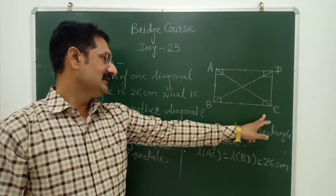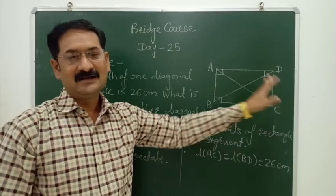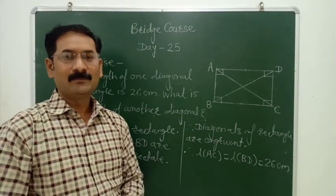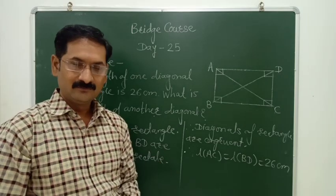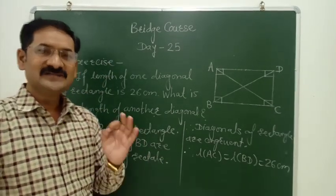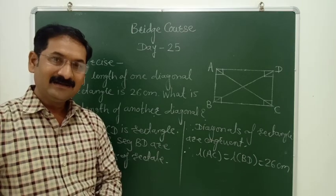Vidyarthi mitra laksh gya, rectangle manil ek diagonal chih length diliyouti, dusre diagonal chih length find karte because the diagonals of rectangle are congruent. This example tumala solve karai sa activity madhe. So take a screenshot.